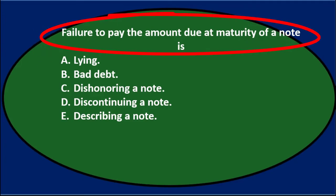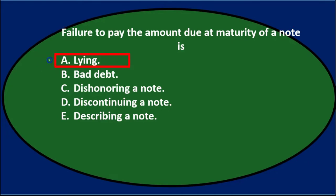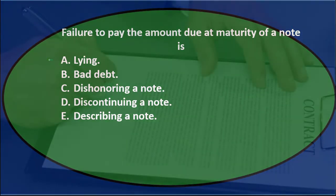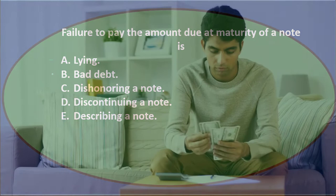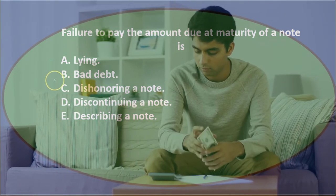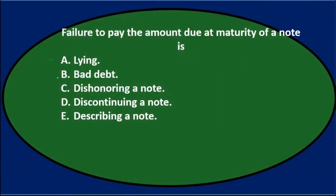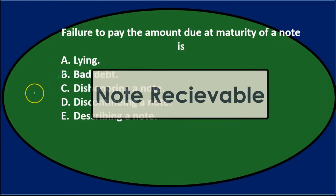Failure to pay the amount due at maturity of a note. A says lying — kind of, because the note we signed is a promissory note. If we don't pay it, we said we were going to and we kind of lied. B says bad debt — that's when someone is going to pay us for accounts receivable and we write that off. That usually deals with accounts receivable more than notes receivable.